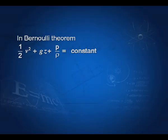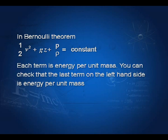In Bernoulli's theorem, the equation is: half v squared plus g z plus p by rho equals constant. We said earlier that each term of the equation must have the same dimensions. Here also, each term is energy per unit mass. You can check that the last term on the left-hand side, p by rho, is also energy per unit mass.